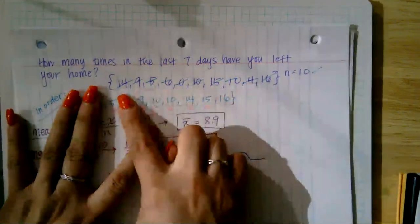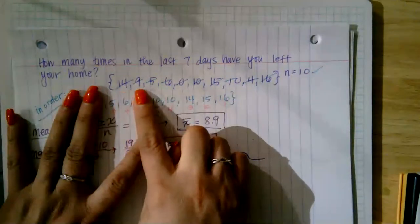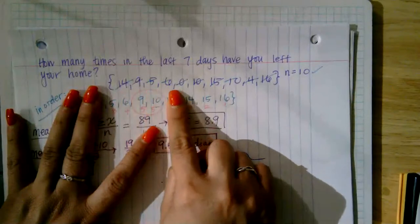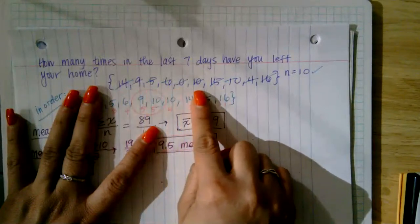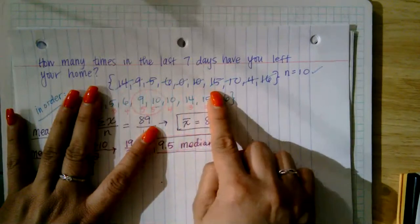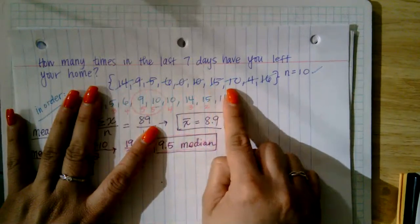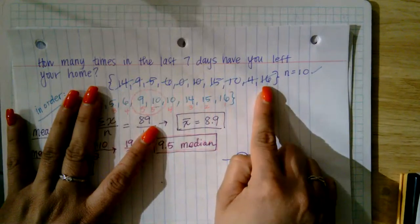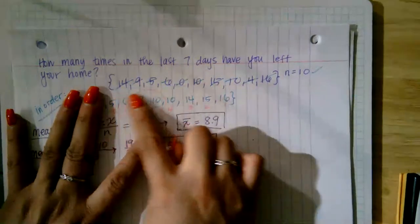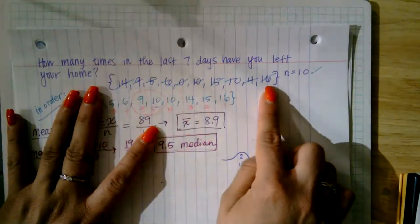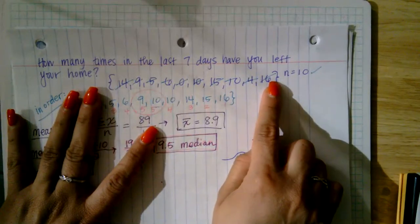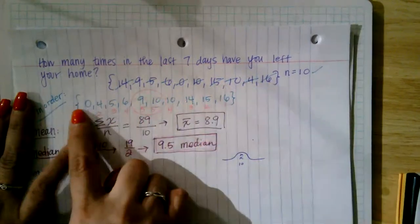These were the responses: 14 times, nine times, five times, six times, zero times, 10 times, 15 times, 10 times, four times, 16 times. The very first thing I need to do is put my data set in order from least to greatest.